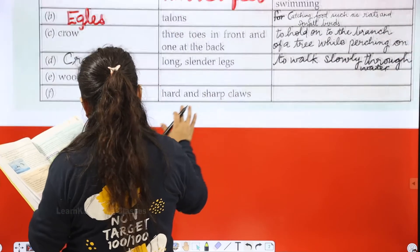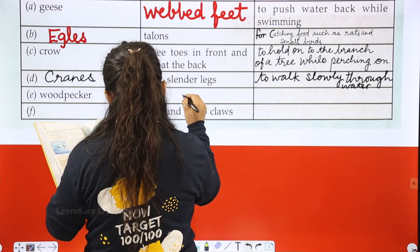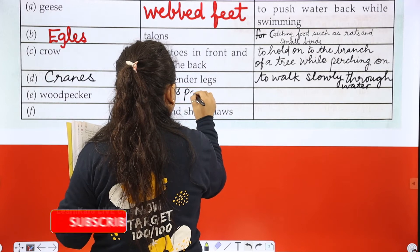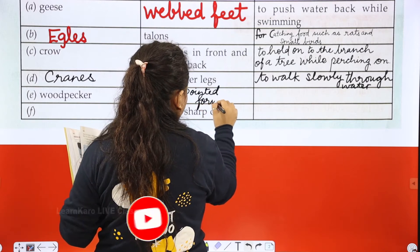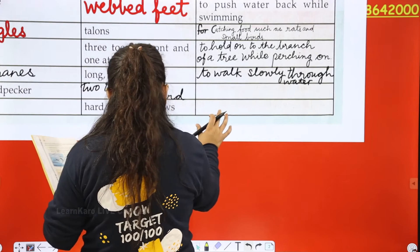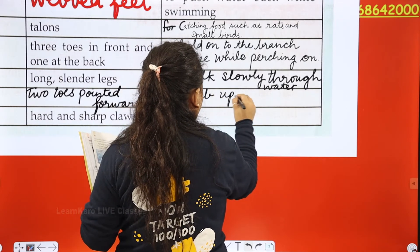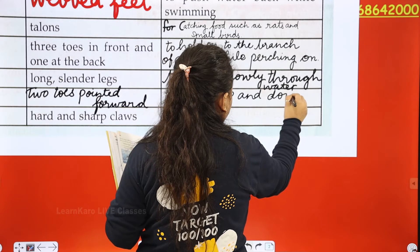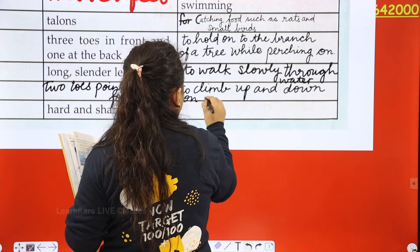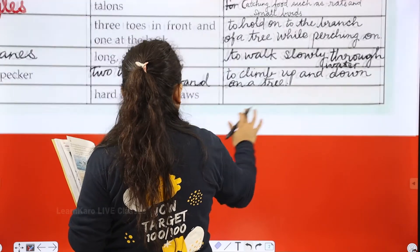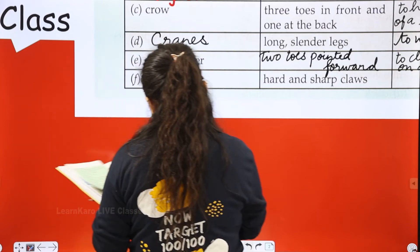Next is woodpecker. Woodpeckers have two toes pointed forward and two toes pointed backward, which helps them to climb up and down a tree.